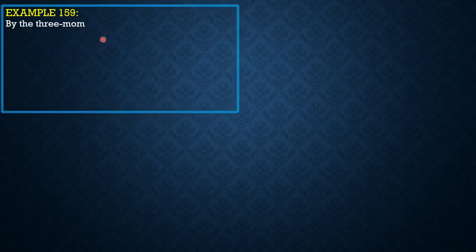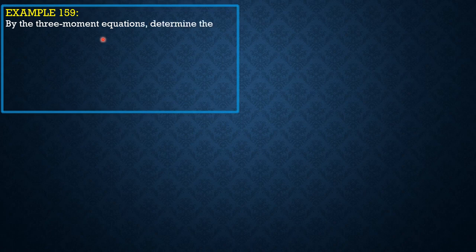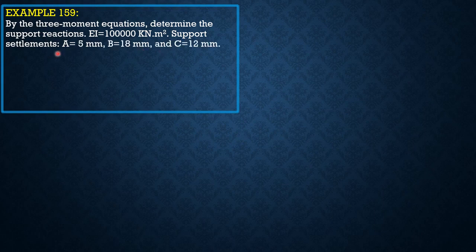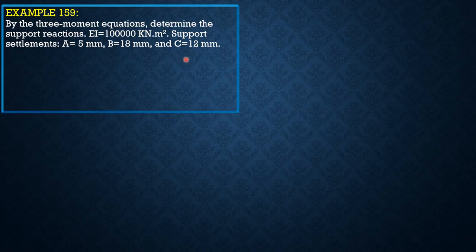Example 159: By the three moment equations, determine the support reactions. EI = 100,000 kN·m². Support settlements: A = 5 mm, B = 18 mm, and C = 12 mm.